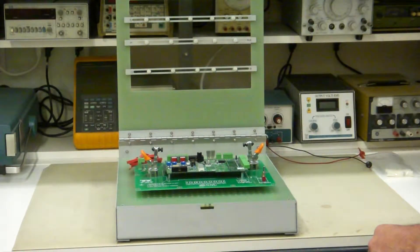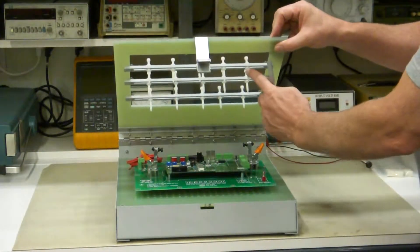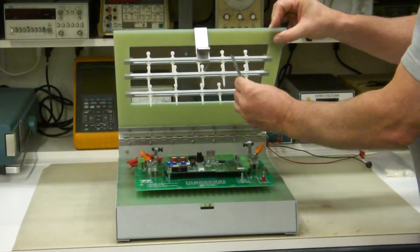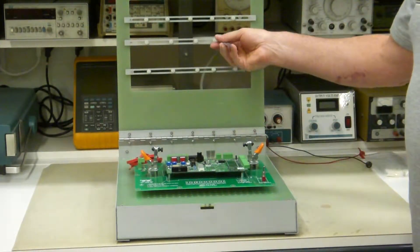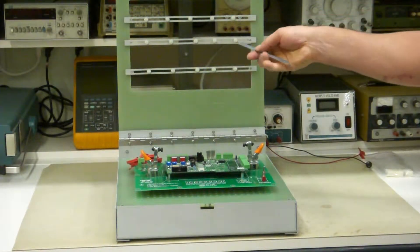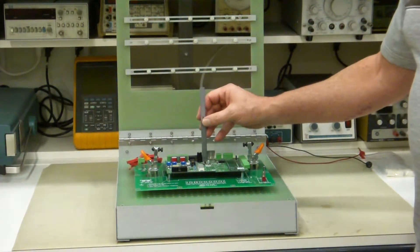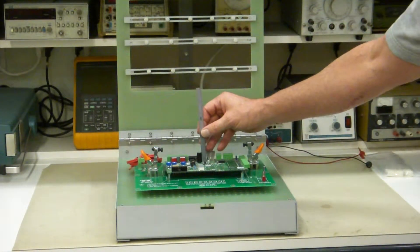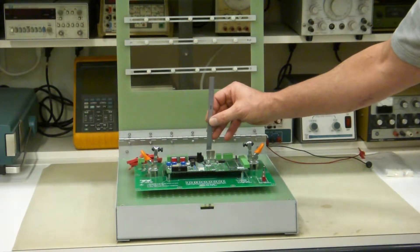Now there's 1.5 inches of clearance between these press down rods and between the top of the circuit board and the cross members here of the press down rods. So you've got 1.5 inches of clearance.